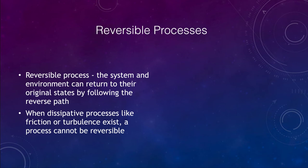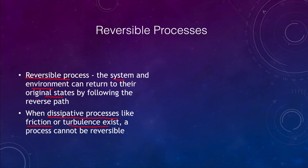In a reversible process, the system and the environment can return to their original states by following the reverse path. This would happen only in ideal conditions and will not happen when there are dissipative forces such as friction or turbulence. Because of things like friction and atmospheric resistance, no real process would ever truly be reversible.